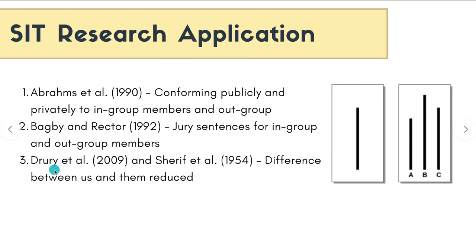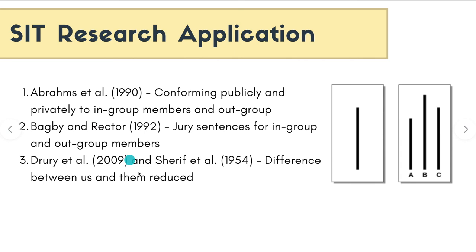The next research was Drury et al. and Sheriff's research. Drury et al. investigated pro-social behavior — basically helping behavior — and Sheriff et al. investigated conflict resolution. Both had similar findings: when there is a reduced difference between us and them, basically a smaller gap between the in-group and out-group, people were more willing to help and also more willing to actively solve conflict. If there was a high distinction between us and them, we would engage in in-group bias and positive distinctiveness, being less willing to help and less willing to resolve conflicts. But when that gap has been reduced, people are more willing to help and resolve conflicts.